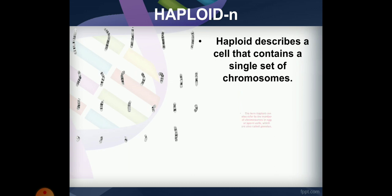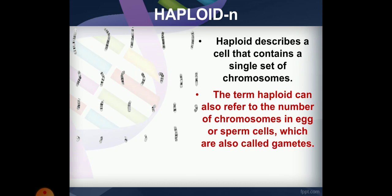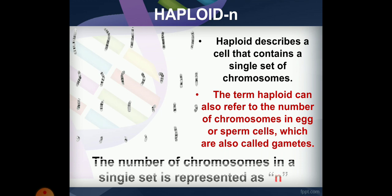The term haploid refers to the number of chromosomes in egg or sperm cells, which are also called gametes. We denote this haploid number as N.